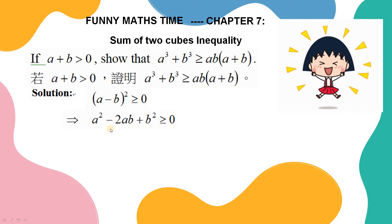And the next step is the tricky point. I divide the minus 2ab into two parts. One part is minus ab, the other part is also minus ab. It means a squared minus ab plus b squared minus ab greater than or equal to zero. This is the most tricky part.